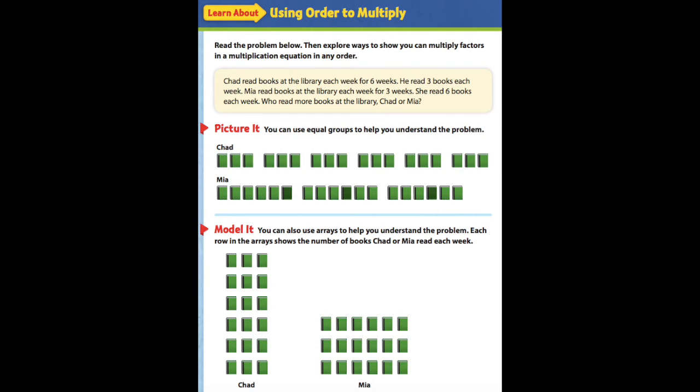Next we have a problem that we are going to be looking at, and this is the problem that you're going to be using to answer your questions today on Google Classroom. Make sure you're paying attention. The problem says, Chad reads books at the library each week for 6 weeks. He read 3 books each week. Mia read books at the library each week for 3 weeks, and she read 6 books each week. So who read more books at the library, Chad or Mia?